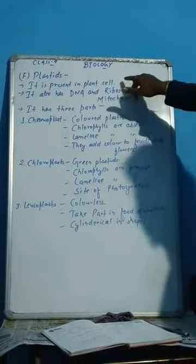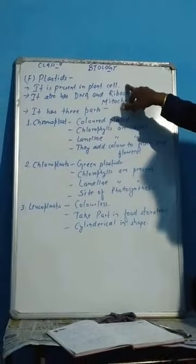We have seen five cell organelles and today we have seen plastids. Plastids are present in plant and in animal cells.